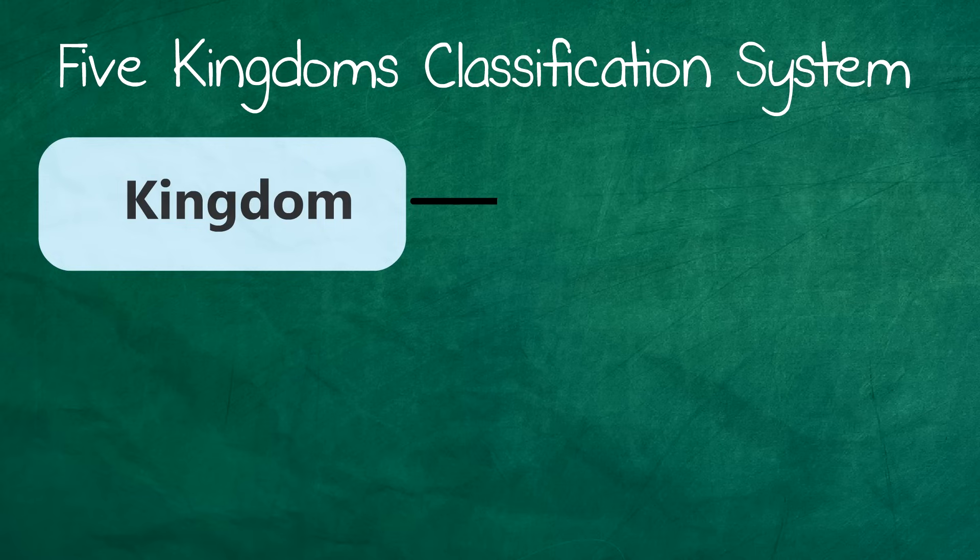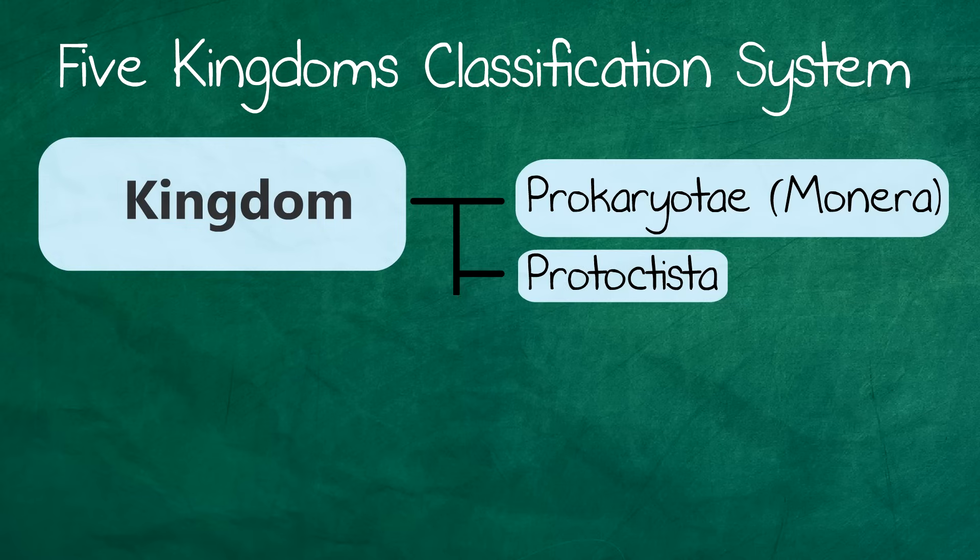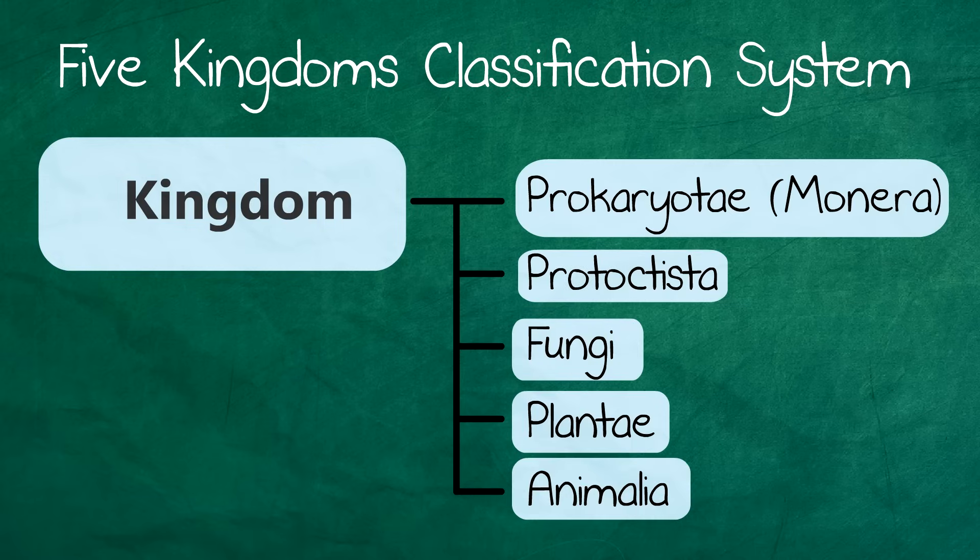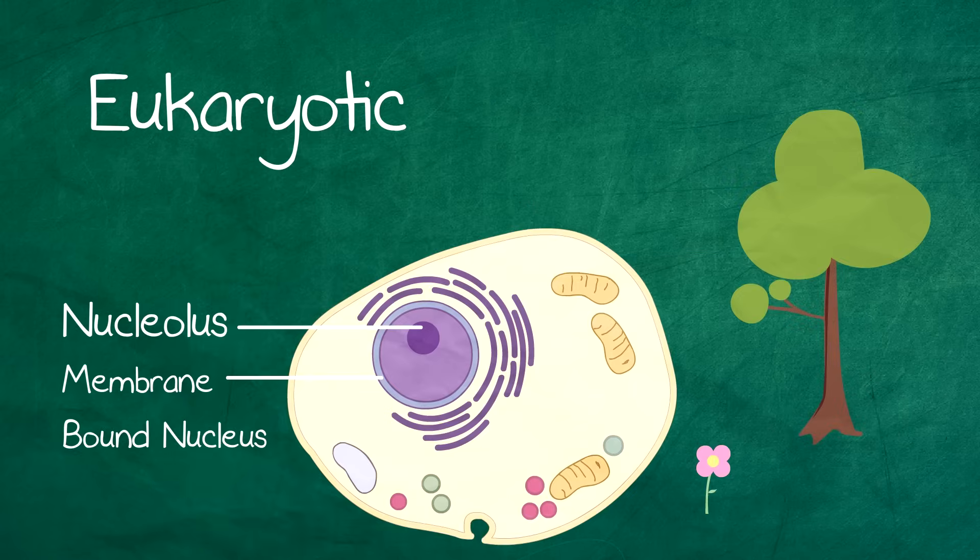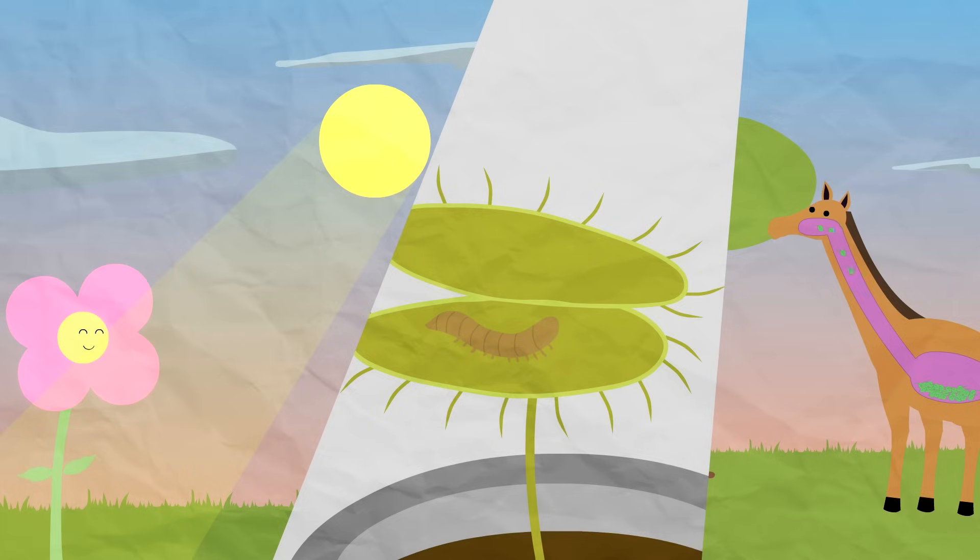So from this video, you should know kingdoms break down into five groups based upon different characteristics including whether they have cell walls, are eukaryotic or prokaryotic, and how they get nutrition.